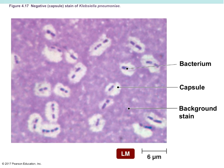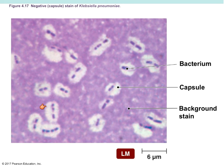We will do a capsule stain using India ink. With this negative stain or capsule stain, we stain the background so that the capsule surrounding the bacteria shows for us — we can see the capsule surrounding the bacterium. The capsule falls into the category of a glycocalyx, is tightly organized, helps protect the bacteria, and helps it adhere to different surfaces.